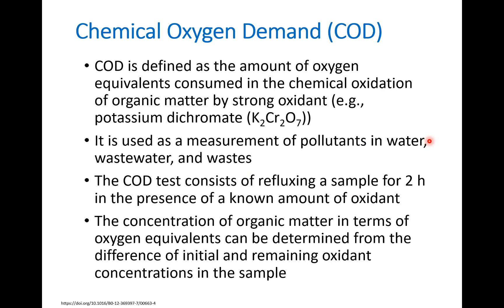What happens is that we add potassium dichromate to the sample and cook it for two hours under refluxing. We know how much oxidant is initially present, and based on the difference — the remaining potassium dichromate — we know how much COD is needed to oxidize the organic matter in the waste or wastewater sample.